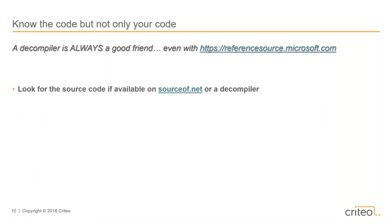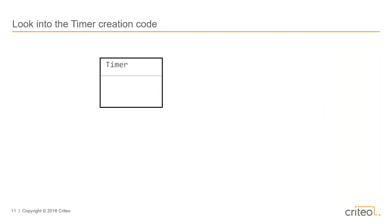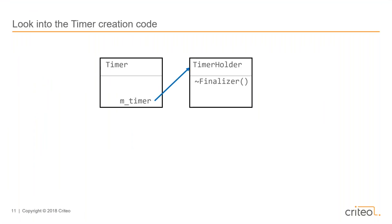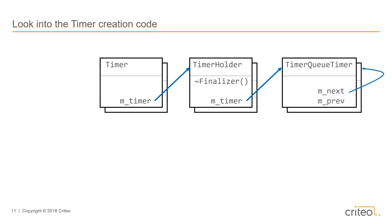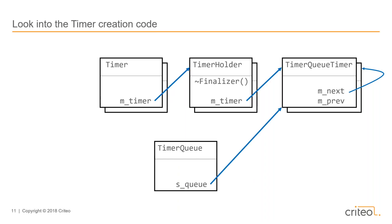It's easier to have a picture of what's going on in addition to looking at the source code. When creating a timer, we keep track of a TimerHolder instance through the m_timer field. The TimerHolder's responsibility is to ensure through the finalizer code that the TimerQTimer will be closed. The TimerQTimer relates to other TimerQTimers through a linked list, managed by the BCL through the TimerQ and the s_q field to access the list of all the timers. That's the big picture.